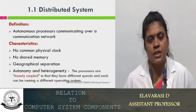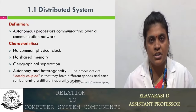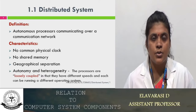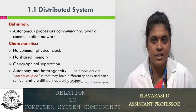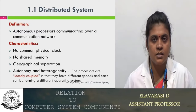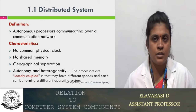A distributed system is able to communicate between systems which are connected over communication networks. The communication network may be either through a LAN or through a WAN. This makes it easy to identify underutilized resources and those resources can be efficiently utilized. Basically, it is meant for resource sharing. That is the ultimate aim of the distributed system.